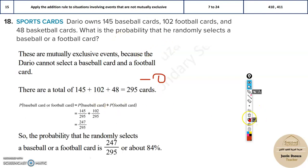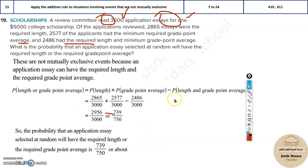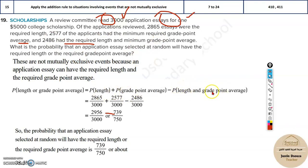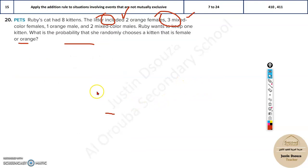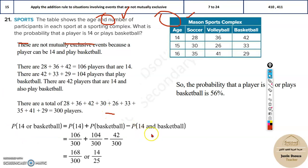Similarly, Dario owns basketball, baseball, and football cards. For the probability of baseball or football: baseball is 145, football is 102. You don't subtract anything because there is no card that is both baseball and football — they are separate, so just add. If events are related to each other, like female and a certain category, then you subtract; if they're mutually exclusive, no subtraction.